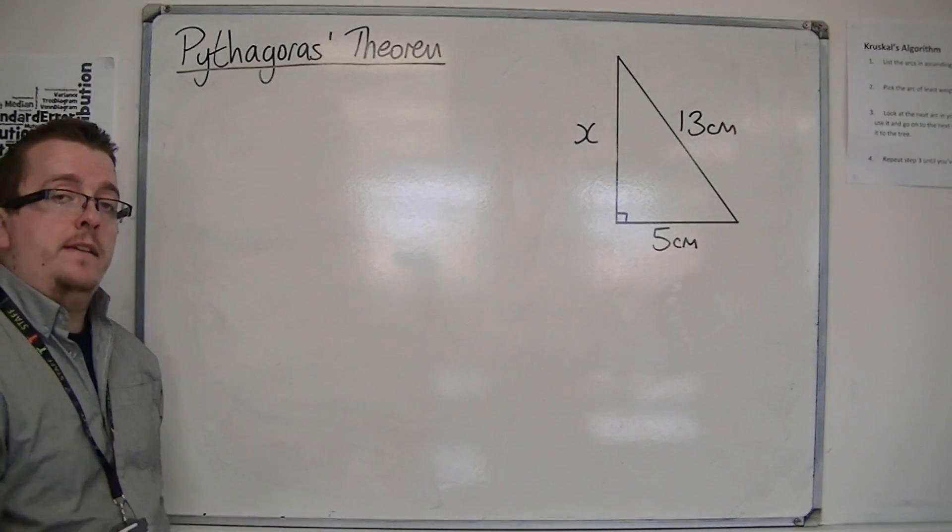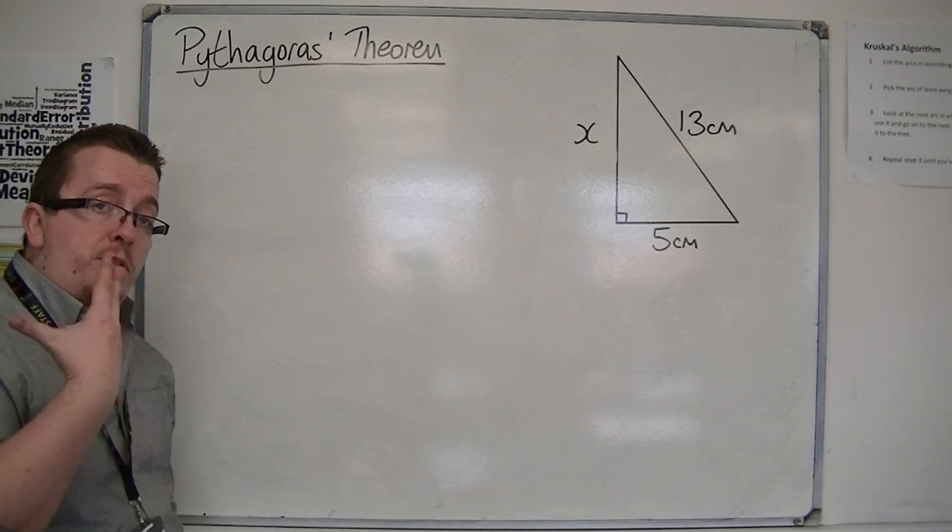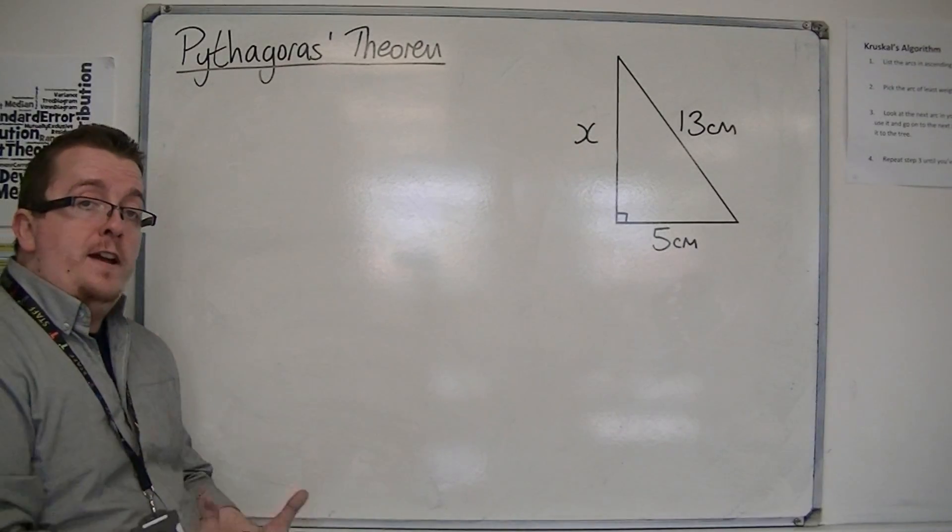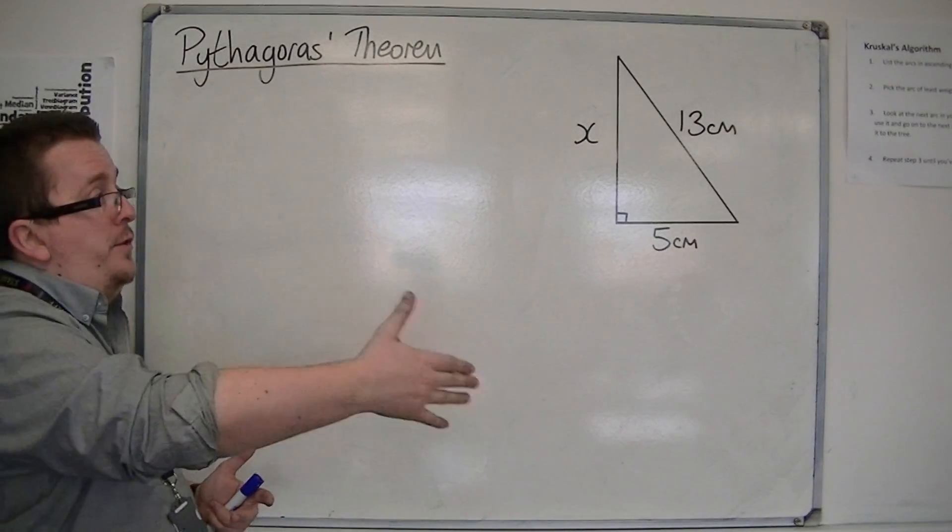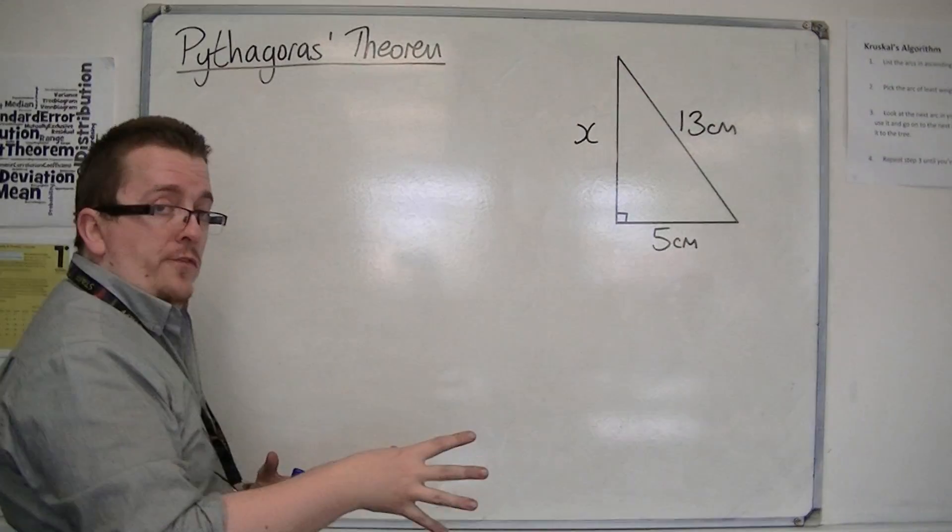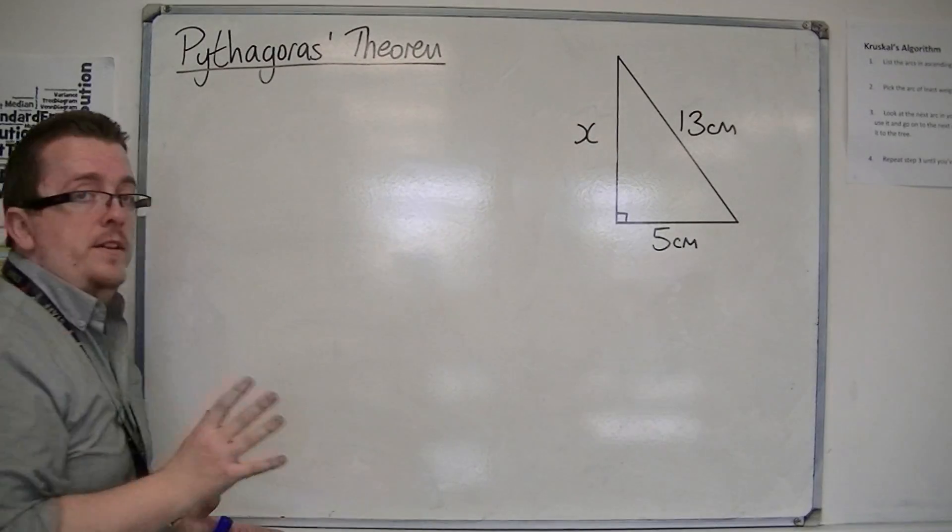Now the only difference here is that in the previous videos, the previous examples that I've looked at, what we've been doing is trying to find the length of our hypotenuse. This time we're not trying to find that length, we're actually looking at the length of one of the other sides.